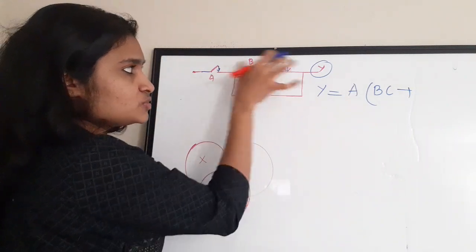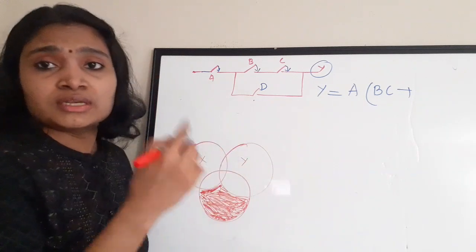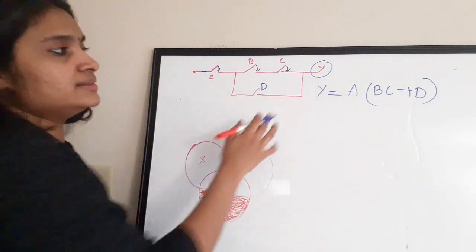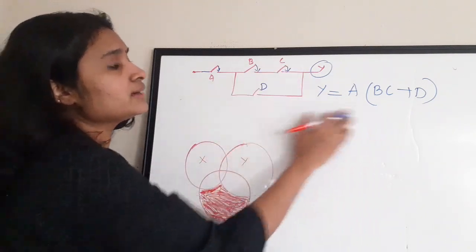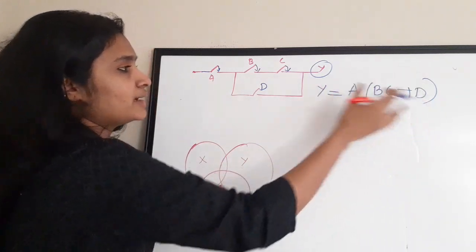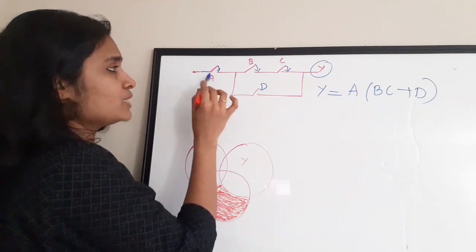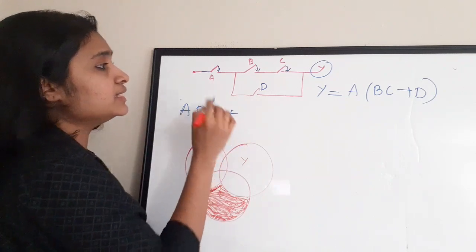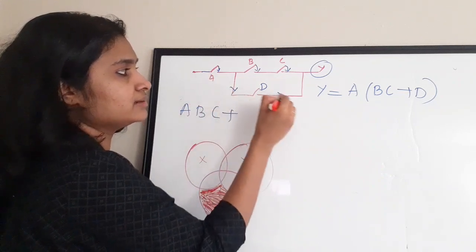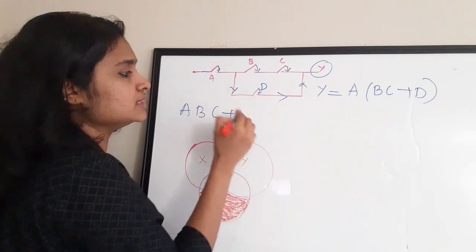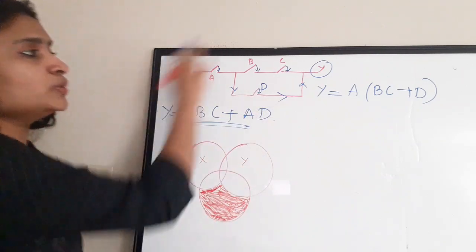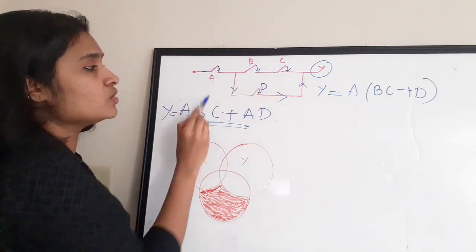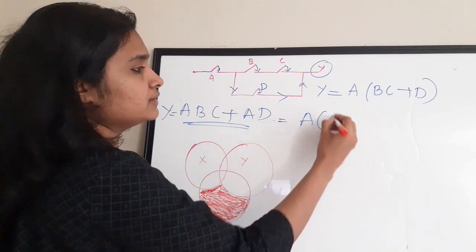There is another branch in parallel with B·C, which is switch D. D can independently produce an output at Y if closed. So the full expression for Y is: Y = A·(B·C + D), or equivalently Y = ABC + AD. Either path through A-B-C or through A-D being closed produces output Y = 1.